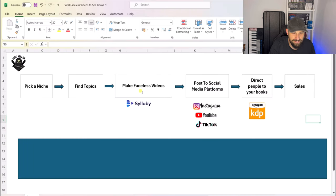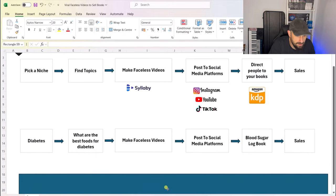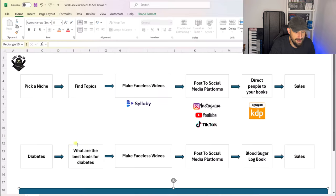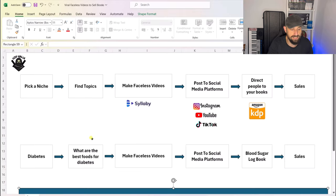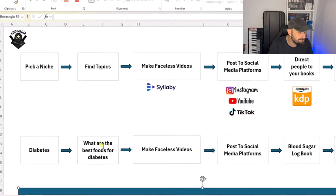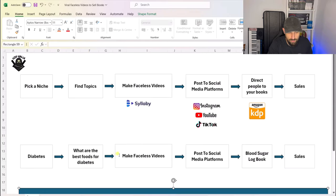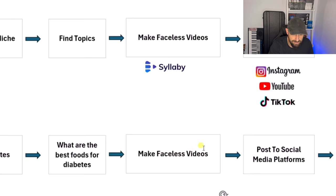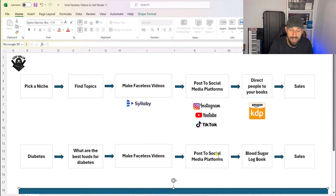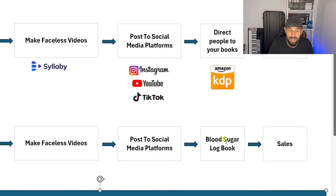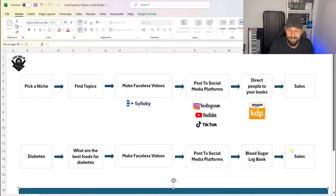Then we are going to direct people to our books which we have published on Amazon KDP. And if people are loving the faceless videos, then they are of course going to love your books, and that's going to convert into sales. So let me just show you an example. If we picked a niche, let's say diabetes — what we could do to find topics is go onto Syllabi itself, or go onto Google and type in diabetes to see what comes up. For example: what are the best foods for diabetes? Then we put that prompt into Syllabi, make a faceless video within a few minutes, post that video to all the social media platforms, and in the video description we could link our blood sugar logbook and hopefully make a sale. That's the process in a nutshell.